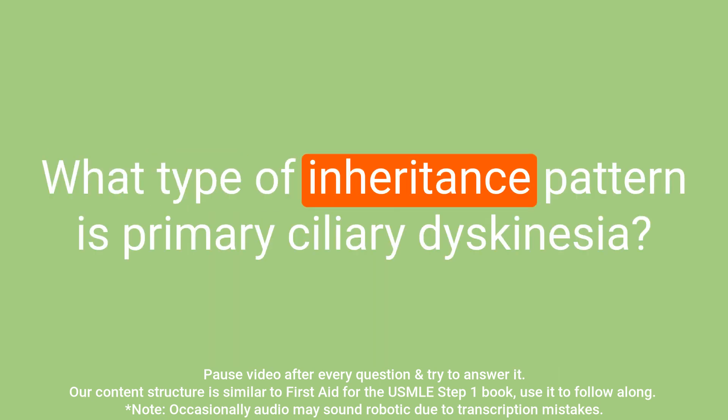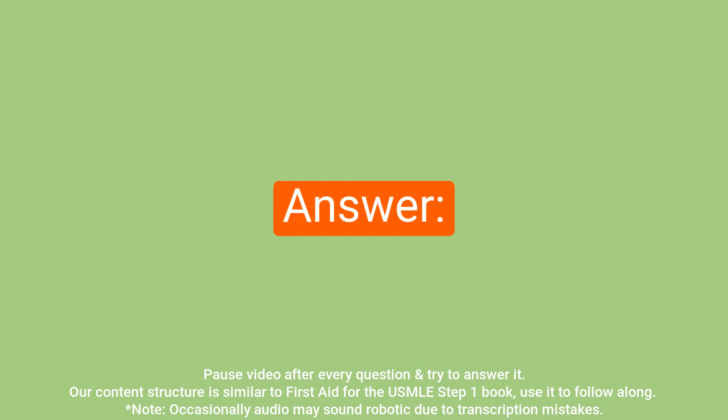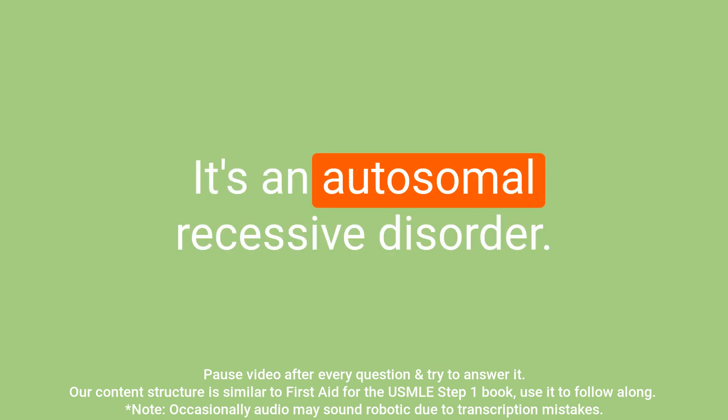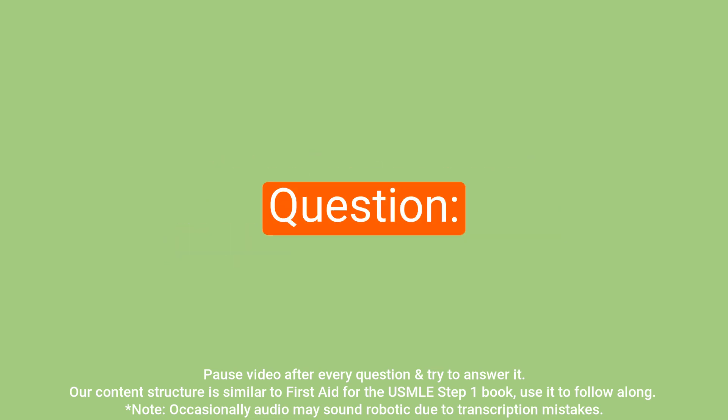Question: What type of inheritance pattern is primary ciliary dyskinesia? Answer: It is an autosomal recessive disorder.